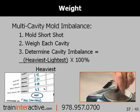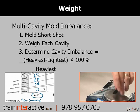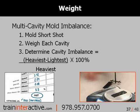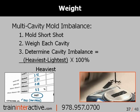Weight can also be a great way to test multi-cavity molds. To test the filling imbalance of a mold, first mold a short shot. Second, weigh the parts from one mold cavity to another, but don't include the runners or gates. Lastly, calculate the percentage of imbalance.